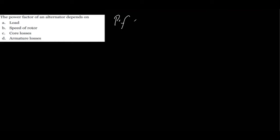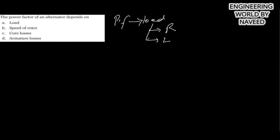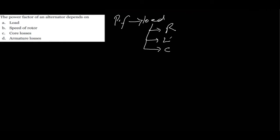The next MCQ is: the power factor of an alternator depends on load, speed of the rotor, coil losses, or armature losses. The correct option is load. The power factor depends on the load — whether your load is inductive or capacitive. If the load is inductive or capacitive, it will result in a poor power factor.